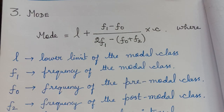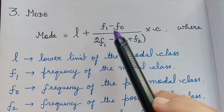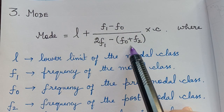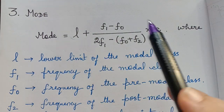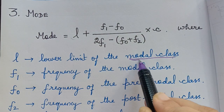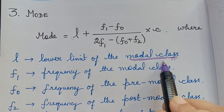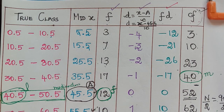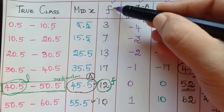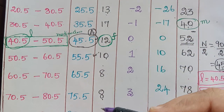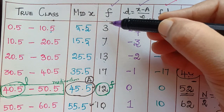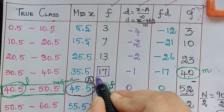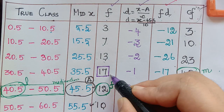The formula for mode is: Mode = L + [(F1 − F0) / (2F1 − F0 − F2)] × C. Here L is the lower limit of the modal class. The modal class is the class for which the frequency is the highest of all frequencies. Looking at the frequency column, the highest frequency is 17, so the class corresponding to this is the modal class.